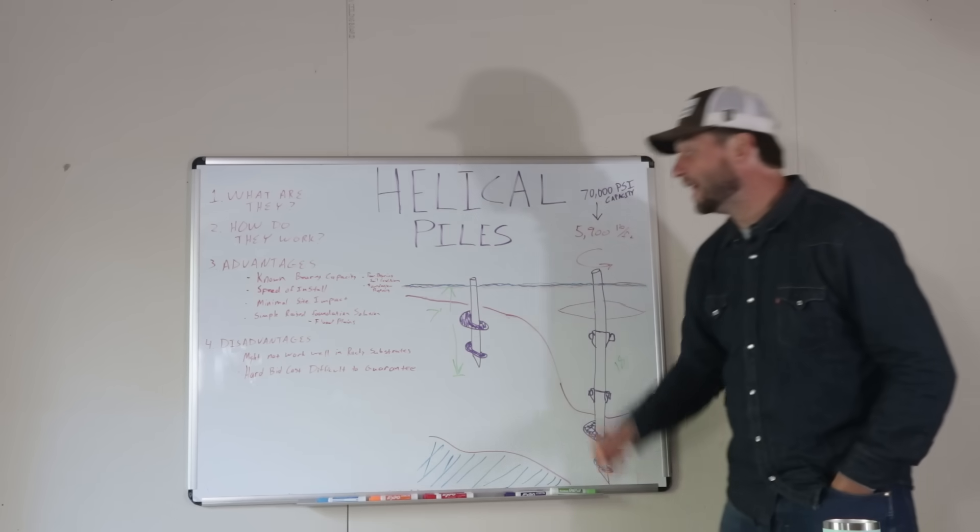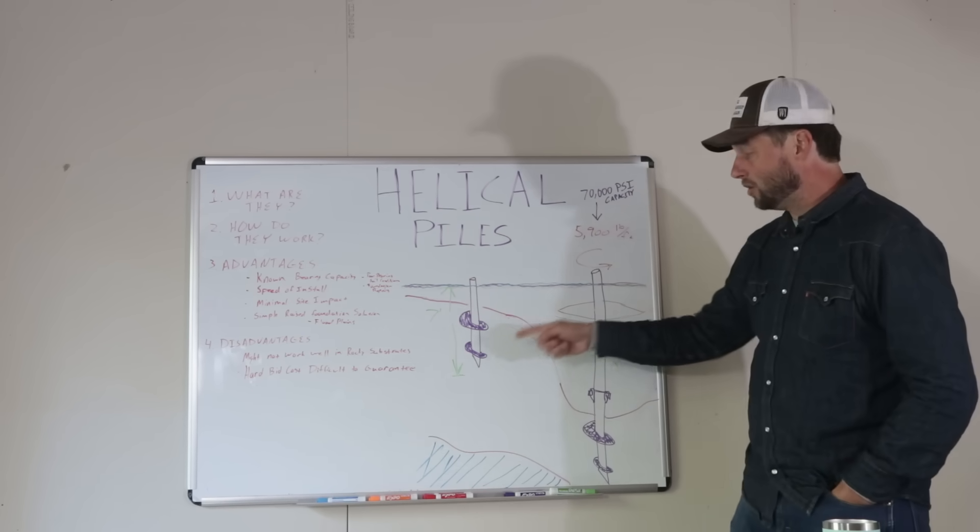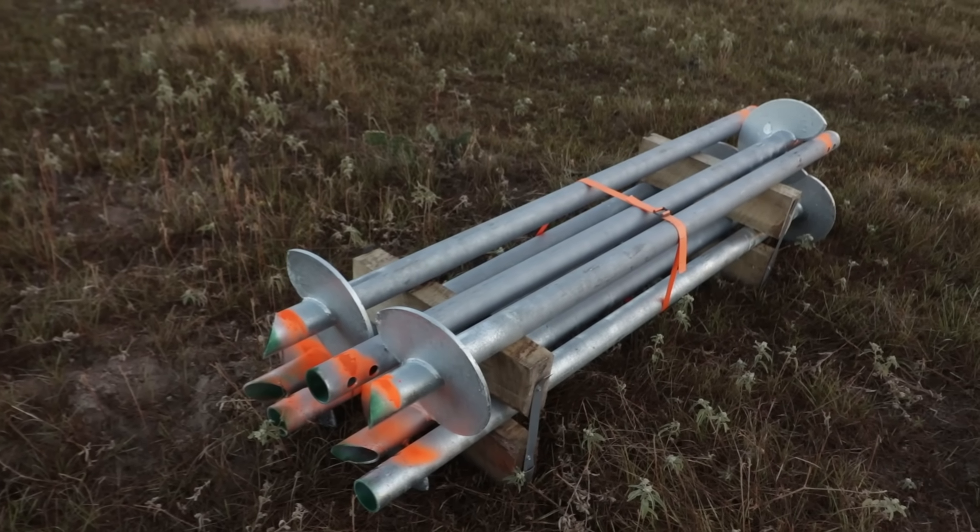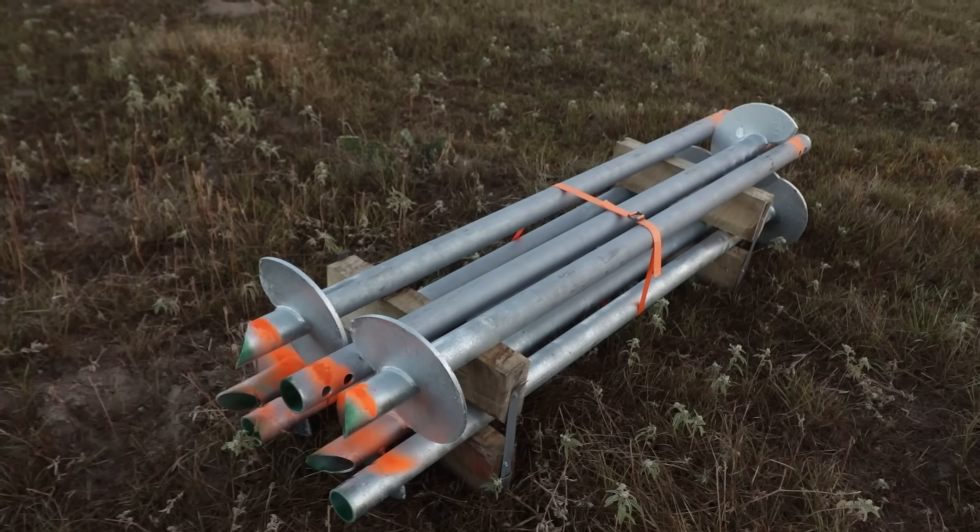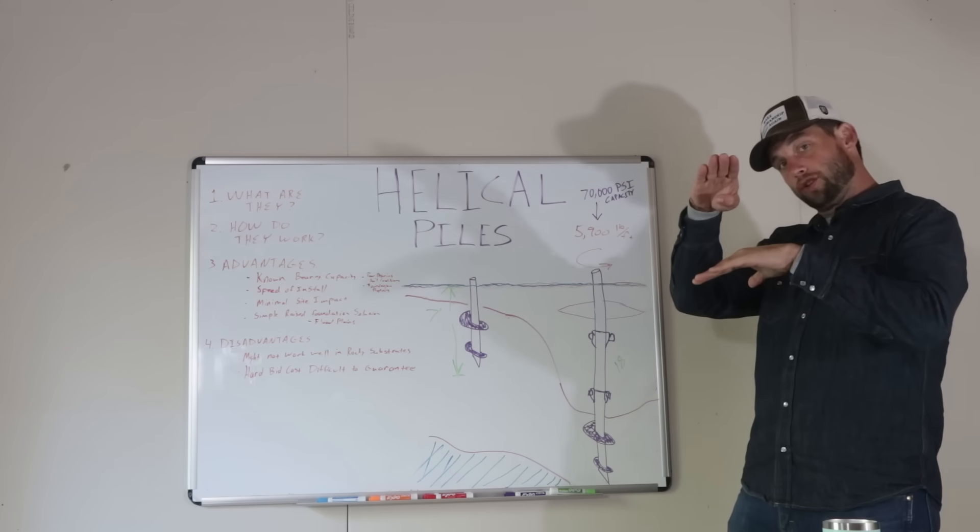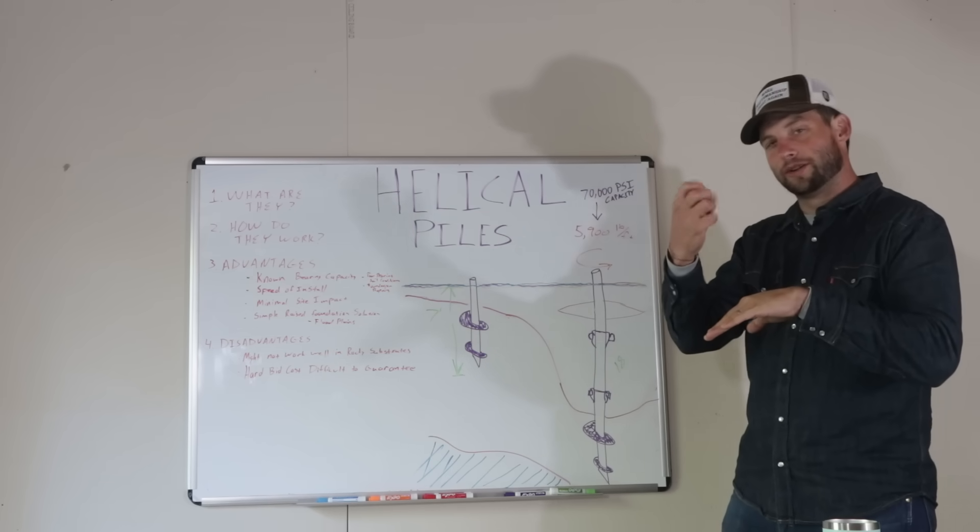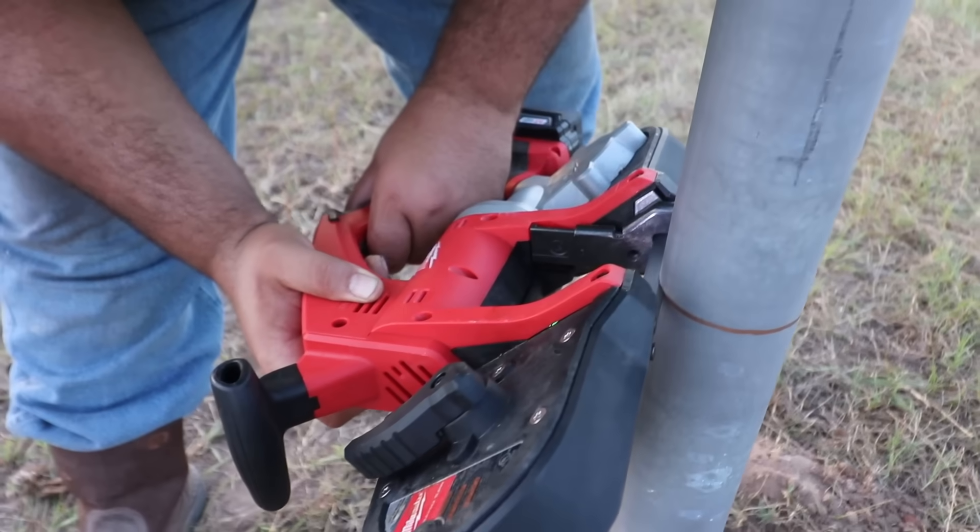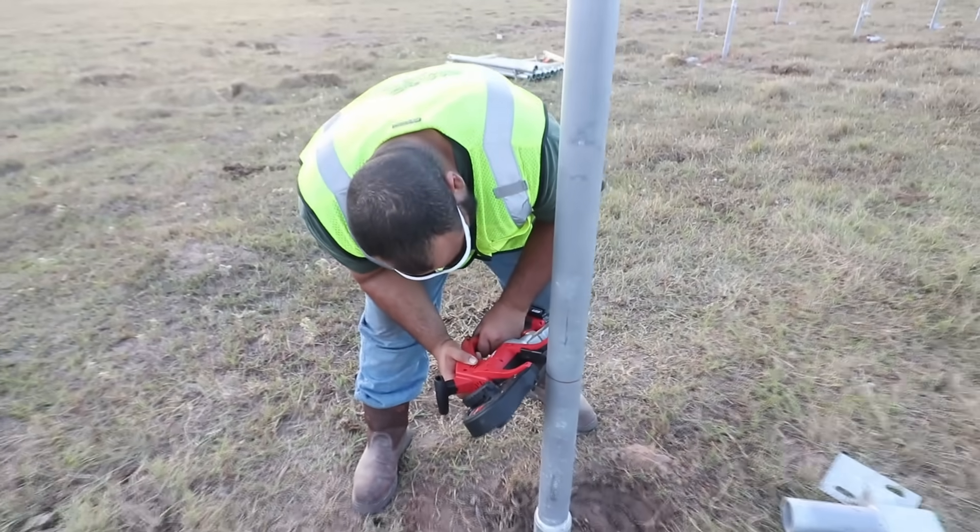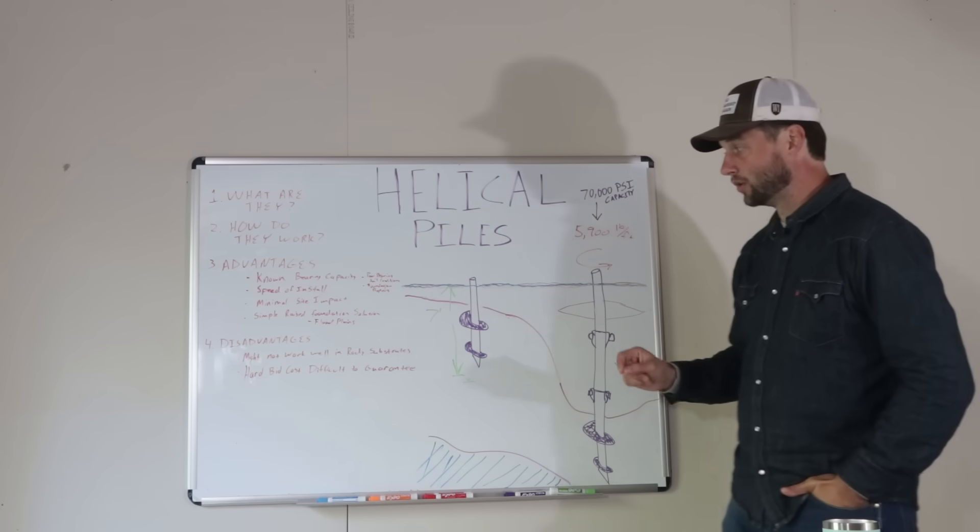The disadvantages, it might not work well in rocky conditions. You can't use this in places where the average size of the aggregate is greater than 75% of the space of your helix. So, if you have a 3-inch pitch on your screw, then you need to stay with rock sizes under, say, 2 inches in order for this to work. So, if you live somewhere with very shallow bedrock or in a really rocky condition, this might not be your solution.